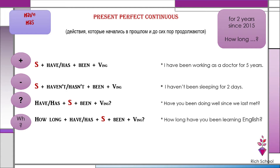And if it's present perfect continuous, it's 'been' + verb-ing. If it's future continuous, then 'be' + verb-ing — 'I will be doing something tomorrow at eight o'clock.' For negatives: subject + haven't/hasn't + been + verb-ing. For questions, you make inversion — 'have/has' goes in front.